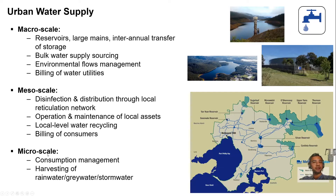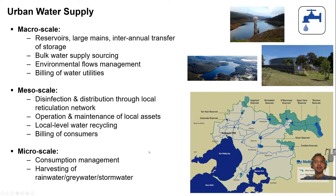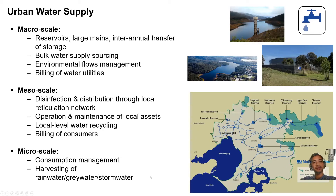At the micro scale — because Australia has experienced drought — people have harvested rainwater or reused greywater. Greywater is the cleaner portion of wastewater obtained from showers, taps, and laundry. With minimal treatment, it poses no major public health risk and can be reused for things like watering gardens or flushing toilets.